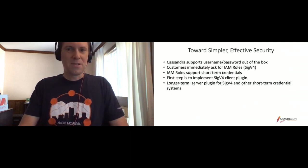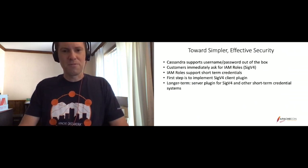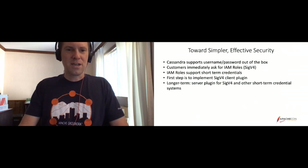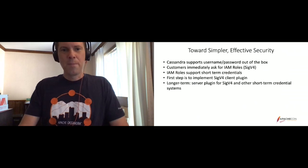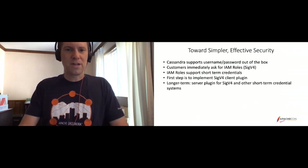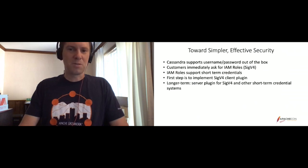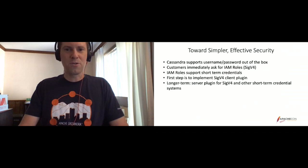When we were building Amazon Keyspaces, one of the tenets we followed was making the customer experience as seamless as possible. Cassandra out-of-the-box supports username and password authentication, so we made sure that using what's called service-specific credentials. But immediately after launch, customers started asking how they could use IAM roles with Amazon Keyspaces so that their Cassandra clients could attach without having to manage all of the usernames and passwords across their hosts.